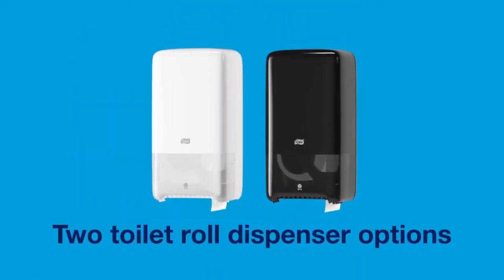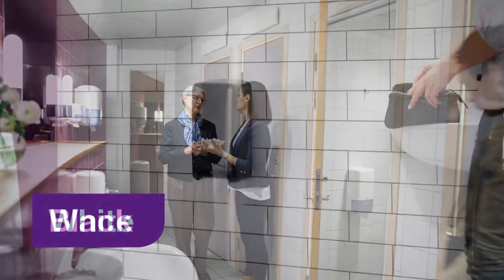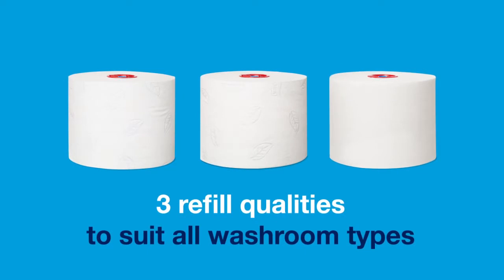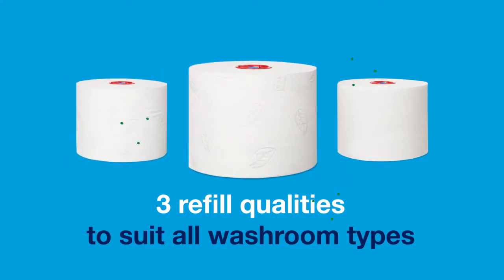Torque mid-size toilet roll comes in two stylish dispenser options. White and black. And has three refill qualities to suit all washroom types. White 2-ply soft. White 2-ply. White 1-ply.